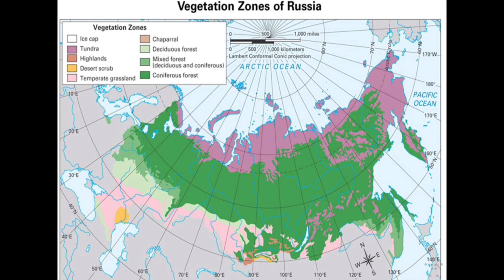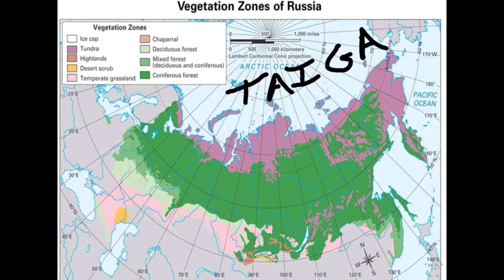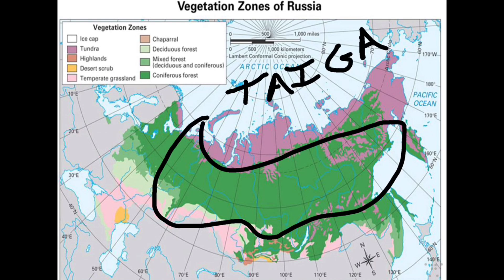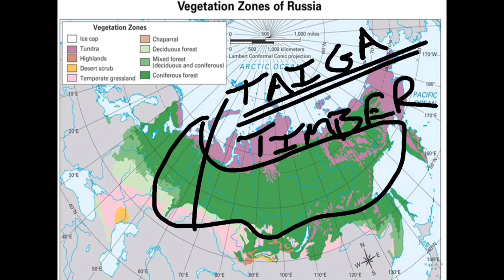The vegetation zone of this area is the taiga — a forest belt that covers two-fifths of European Russia and extends into much of Siberia. So it's west of the Ural Mountains in the North European Plain for two-fifths, then extends into much of Siberia. Because of this, the major economic activity of the taiga is going to be timber, since taiga by definition is a forest belt with a lot of trees, making the timber industry very profitable.